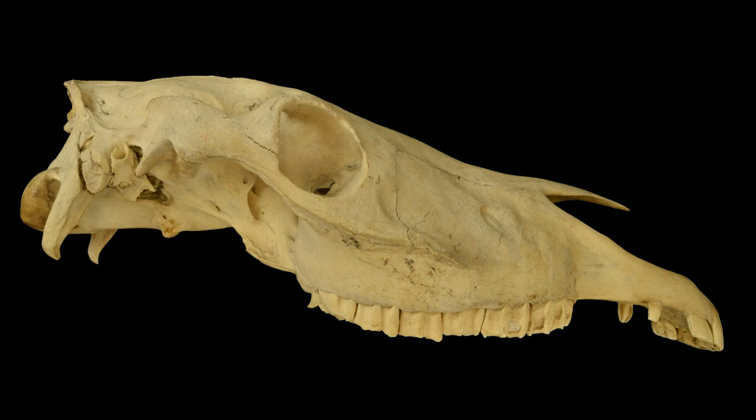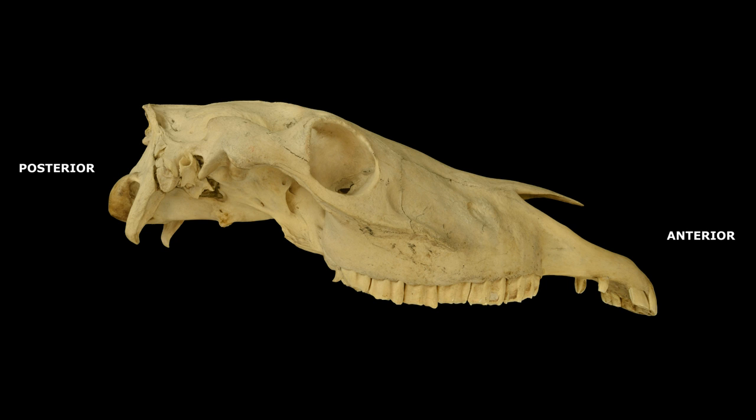Let's look at a horse skull so we know how to make some measurements of their teeth. This is the side view from the right, or right lateral. Looking at the skull from this aspect, the anterior or front of the skull is to the right, and the posterior or back of the skull is to the left. All of these terms will be important once we start making measurements of the teeth.